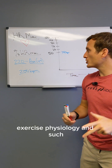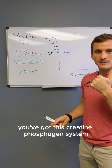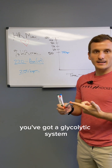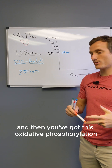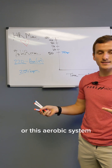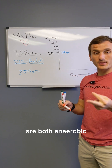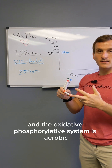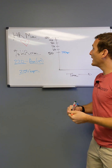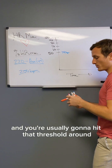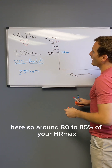You've got the creatine phosphate system, the glycolytic system, and the oxidative phosphorylation system — the aerobic system. The creatine phosphate and glycolytic systems are both anaerobic, and the oxidative phosphorylation system is aerobic.